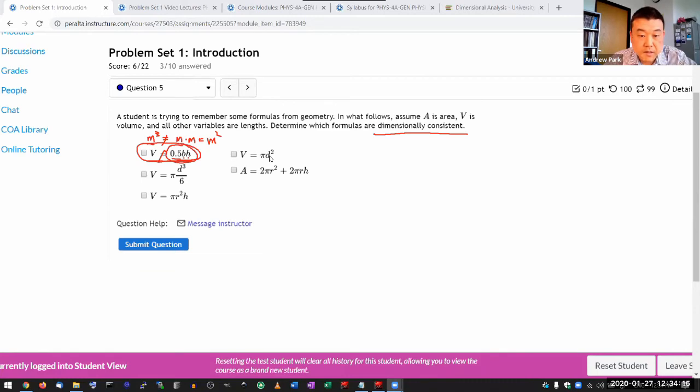This says meter squared, so it's also dimensionally inconsistent. This says meter cubed, so this is dimensionally consistent. Now this might not be the correct formula, I don't even know what this is supposed to be for, but at least it has consistent units. Same here, you have meter squared times meter, so it should be overall meter cubed.